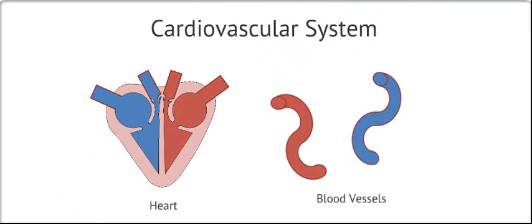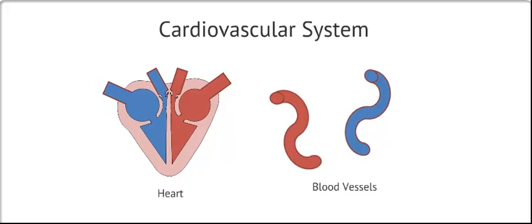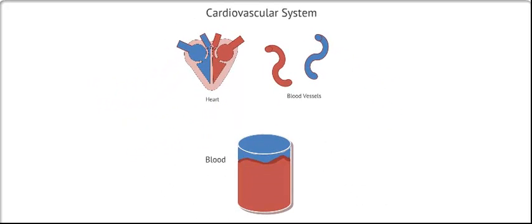The vertebrate circulatory system is known as the cardiovascular system. Cardio refers to the heart, and vascular means blood vessels, so we know most of the components simply from its name. Also a part of this system is the circulating fluid.